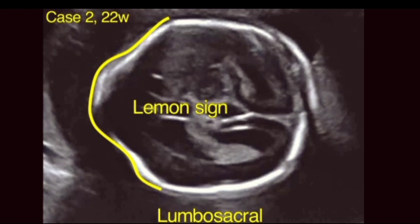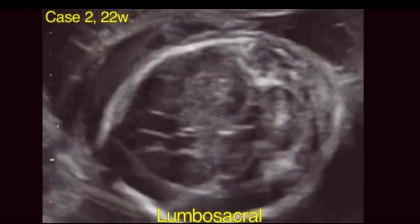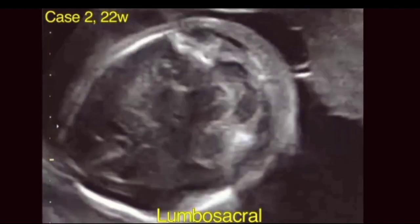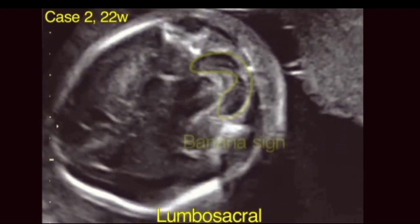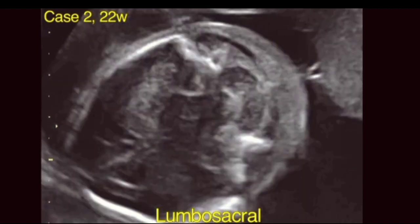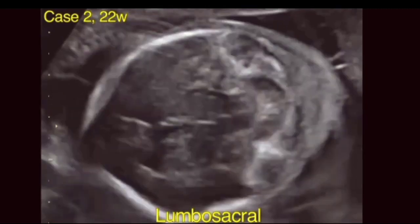Site of open spina bifida: lumbosacral in 65%, sacral in 24%, thoracolumbar in 10%, and cervical in 1%. Open spina bifida is associated with Arnold-Chiari II malformation, with caudal displacement of the brain stem and obliteration of the cisterna magna.